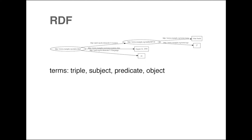This is kind of the fundamental problem in the graph database world: the property graph and the RDF approaches are basically not interoperable. They both have the same computational power and you can represent any data either way, but they don't interoperate in terms of their ecosystems. There are ad hoc ways to convert one to the other, but there's no principled mapping mechanism. From a practical point of view, when you go into the realm of graph databases, you have to be clear on which side of the fence you want to operate.